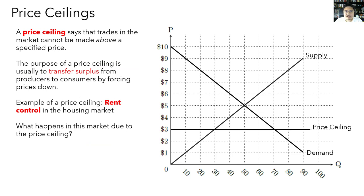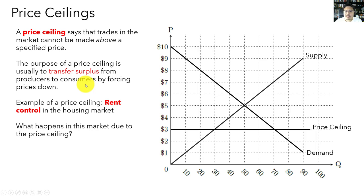A price ceiling says that trades in the market cannot be made above a certain price. An example in real life is rent control in the housing market — landlords cannot charge tenants rent exceeding a specified amount, usually tied to some base price the government determines as fair. The purpose of a price ceiling is usually to transfer surplus from producers to consumers by forcing prices lower. In rent control, the idea is to transfer surplus from landlords to tenants by keeping rents down.